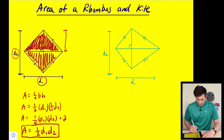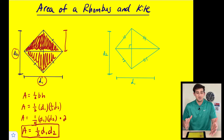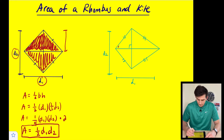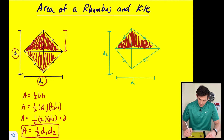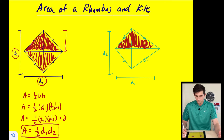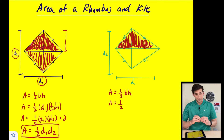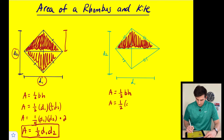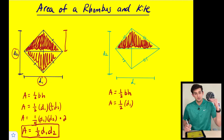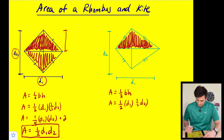The area formula for the kite is exactly the same. A kite has consecutive sides that are congruent, and we have our two diagonals here. For the first triangle at the top, we would say area is equal to one half base times height. Once again the entire base would be diagonal number one and the height would be half of diagonal number two.